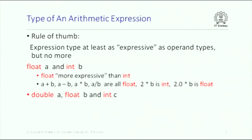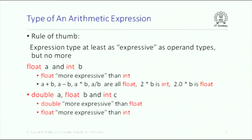Suppose I have these declarations: double a, float b, and int c. Double is considered more expressive than float — you can reason it out naturally because double has a larger precision as well as a larger range. And float is more expressive than int. So a + (b*c) will have type double. c is int and b is float, so b*c will be float. a is double, so a plus anything will be double, and that anything will be converted to double internally.